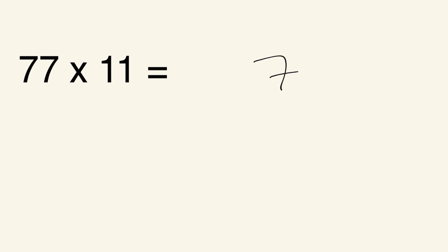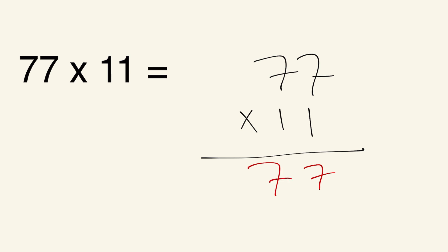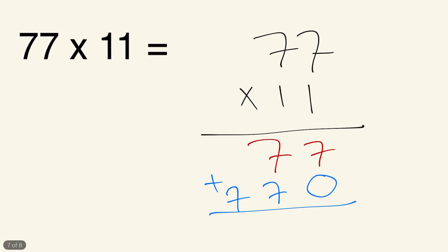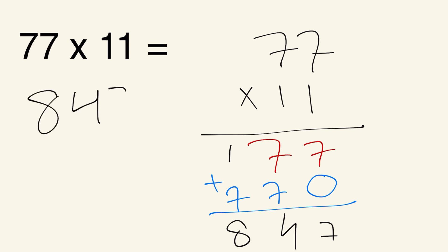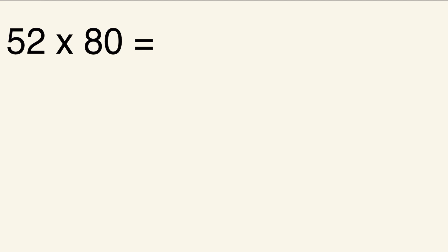Next example: 77 times 11. Write it vertically. 7 times 1 is 7, and 7 times 1 is 7 again — so we get 77. Add the 0, and again 7 times 1 is 7 and 7 times 1 is 7 — giving 770. Adding: 7 plus 0 is 7, 7 plus 7 is 14 — write 4, carry 1. Then 7 plus the carried 1 is 8. So 77 times 11 is 847.